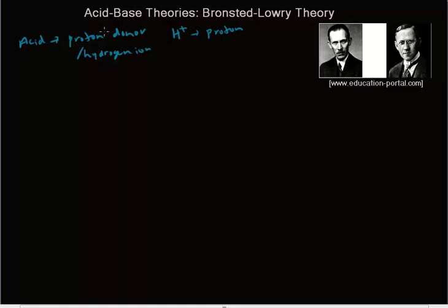According to them, an acid is a proton donor. A proton is also known as a hydrogen ion. To understand why: a hydrogen atom has just one proton and one electron. If it loses that lone electron, there is no more electron — just one proton left. That's why the hydrogen ion is also known as a proton.